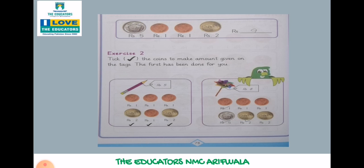Tag me 5 rupees amount dii gahi hai. We will write it here: 2 plus 2, 4 will be 4 and 1, 5. So this tag will be 8. We will write it here. 5 plus 2, 5 plus 2, so 6 will be 7.